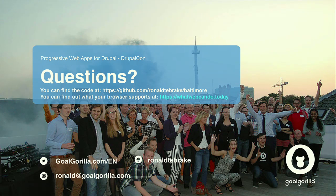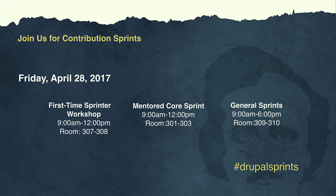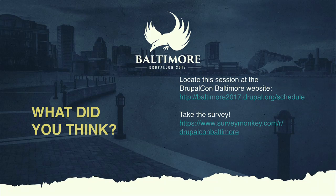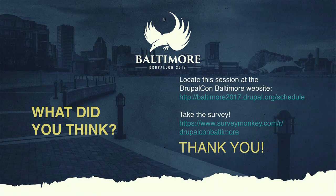I'm open for questions. But first I'd like to share that there's a GitHub repo with all the code — you can look into it there. It's my username slash Baltimore. There's also a really cool tool called 'What Web Can Do Today', where you can see what your browser can already do with Progressive Web Apps. If you have any questions, there's a mic in the middle so we can archive everything. No questions? This Friday there are sprints — join us, I'll be there as well and might work on the Progressive Web App. Please fill in the survey and rate the session. Thanks for your attention.